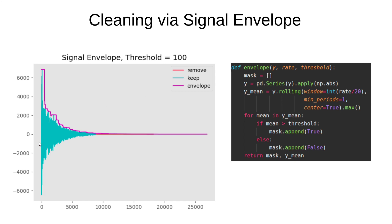The way to handle this is to take the absolute value of the signal to get just the positive portion, then use a rolling window. In pandas, you can convert the signal to a series, apply the absolute value, and call the rolling method with a certain window length. This rolling window takes the max as it goes across the signal, giving you a signal envelope. When that envelope value falls below your threshold, you remove those samples — effectively removing all the dead portions of the signal.